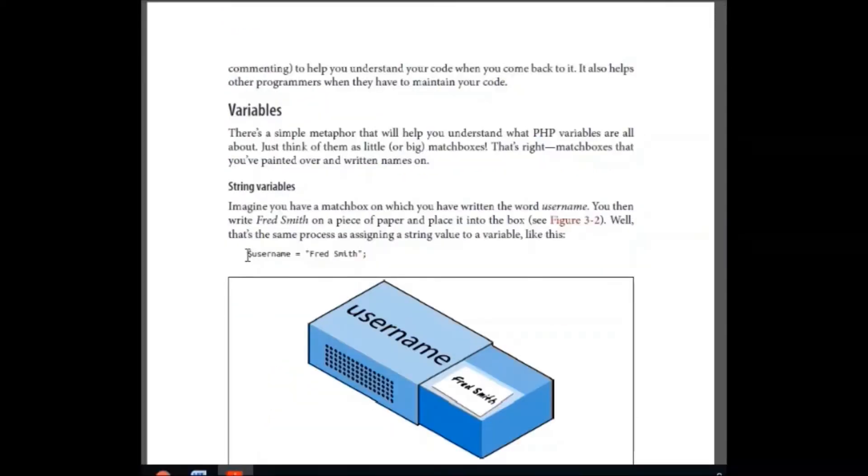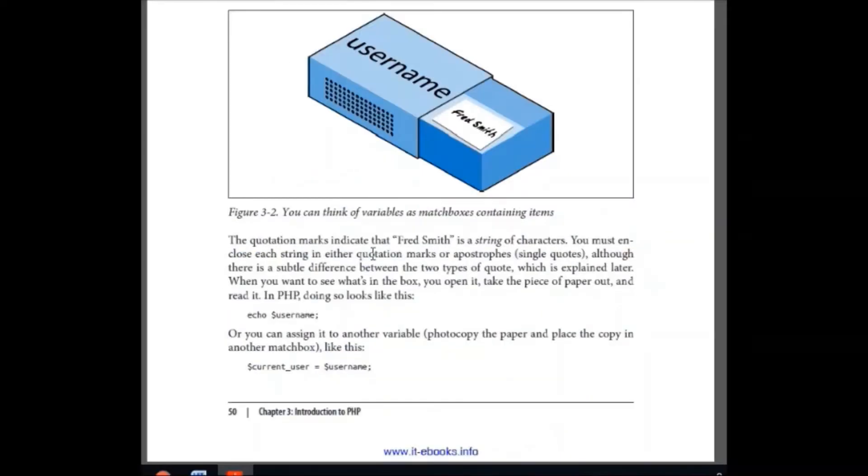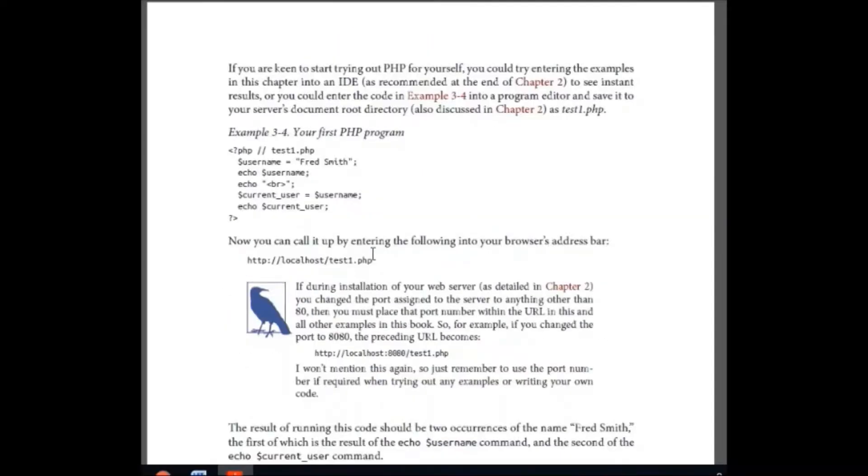Then you have string variables. You give it like this in double quotes. Then here you see there is another interesting thing. Username variable username which is initialized with the value Fred Smith. Echo username, this will print this name Fred Smith.